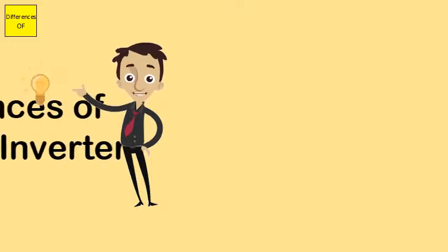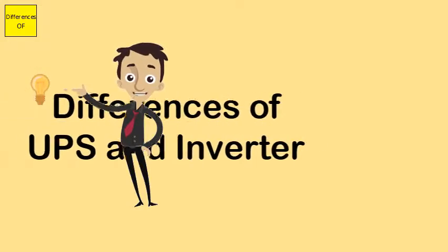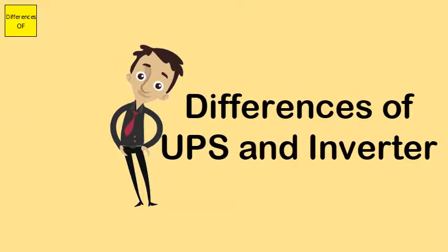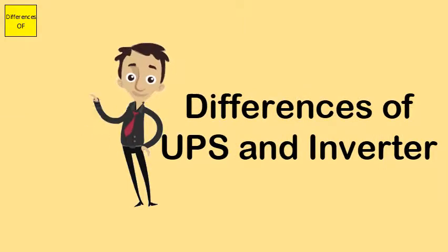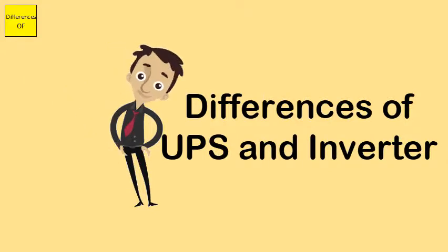Difference between UPS and Inverter. UPS stands for Uninterruptible Power Supply. Inverter is commonly seen in alternative power installations like solar.